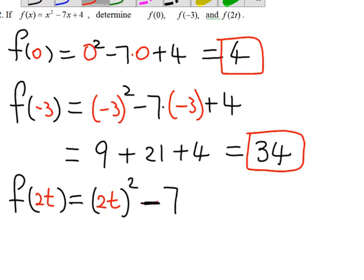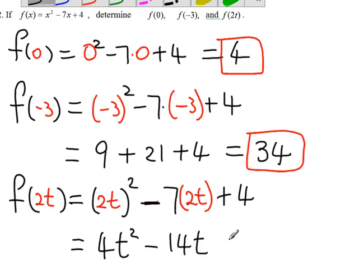Plus 4, which is equal to 4t squared minus 14t plus 4.